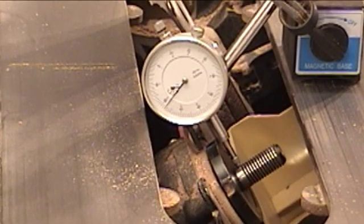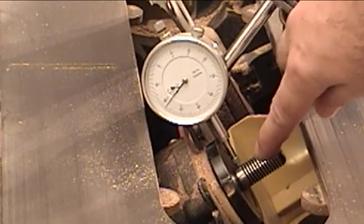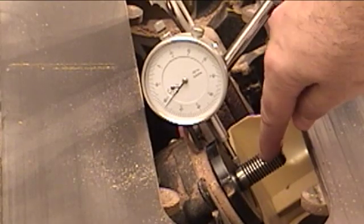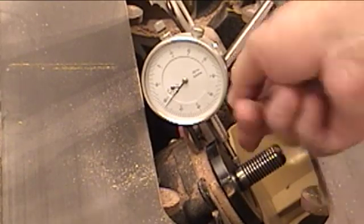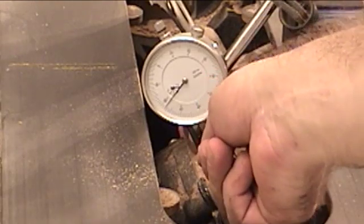Now the next thing I like to do is check for arbor and flange run out. The arbor is this threaded portion which holds your table saw blade onto your table saw and this back portion is the flange.